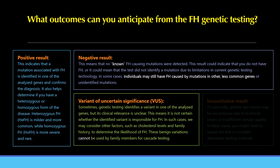A Variant of Uncertain Significance (VUS) occurs when genetic testing identifies a variant in one of the analyzed genes but its clinical relevance is unclear. It is not certain whether the identified variant is responsible for FH. In such cases, other factors such as cholesterol levels and family history are considered to determine the likelihood of FH. Family members cannot use these variations for cascade testing.